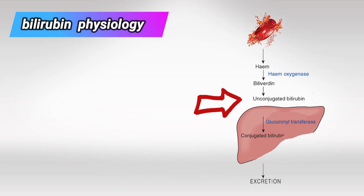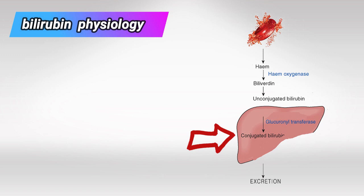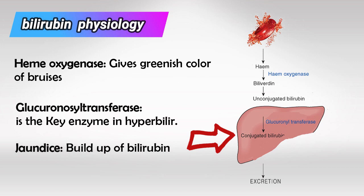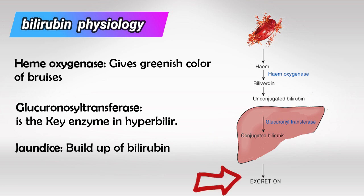The indirect bilirubin is carried by albumin to the liver, where inside the liver it will be conjugated using the enzyme UGT. The conjugated bilirubin is found inside the liver and cannot leave the liver, so it will be excreted in the bile.